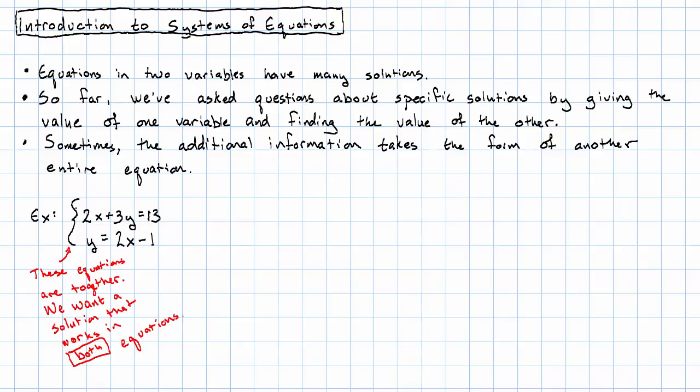When we have a pair of equations, or more generally, any list of equations that are together in this way, where we want a solution for all of the equations at the same time, we refer to that as a system of equations.